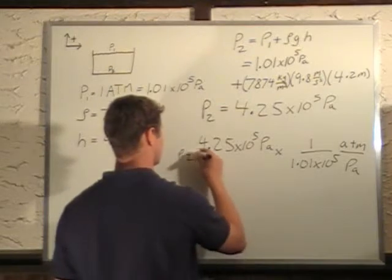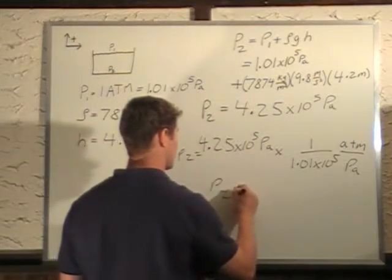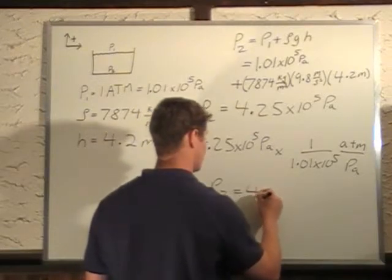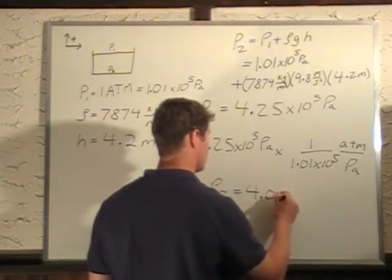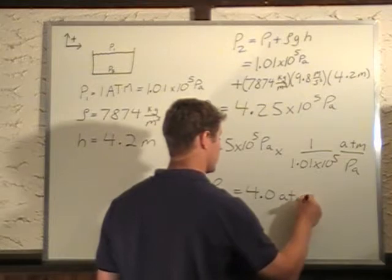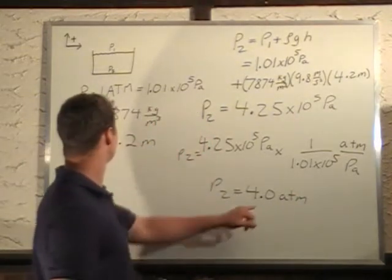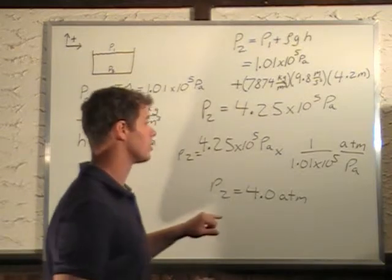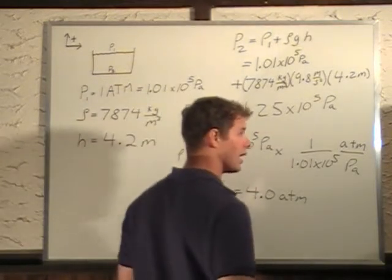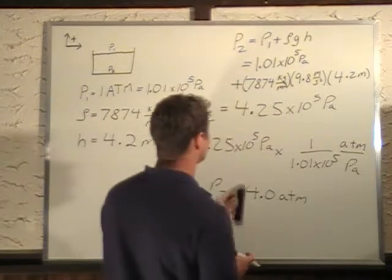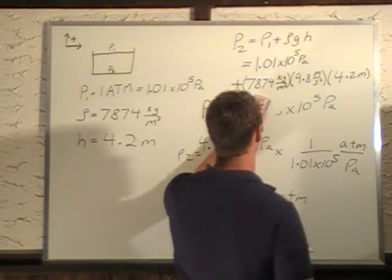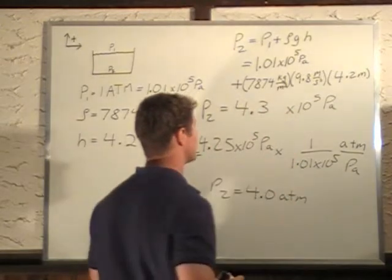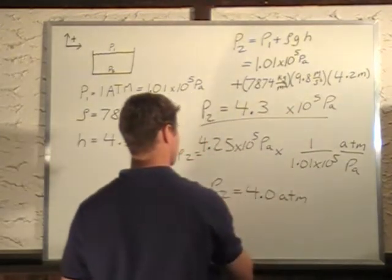So we do that, and we can say that second pressure is also equal to basically 4.0 atmospheres. And this is rounded to 2 significant digits, because we have 2 significant digits here. So this should actually be 4.3 times 10 to the 5 pascals. That final answer.